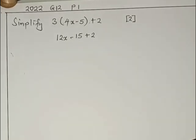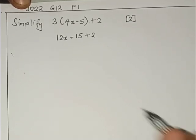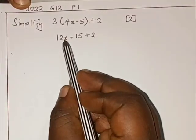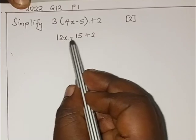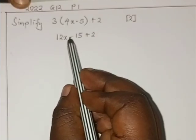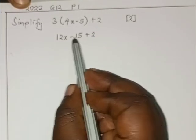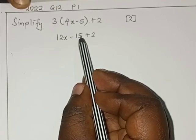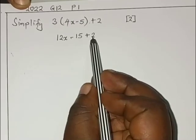From here you will apply the concept of like terms. You add those that are like terms. From this expression here, 12x is on its own, so this cannot be added to 15 or subtracted from 15. They are not like terms. 15 doesn't have x, so the like terms here is 15 and 2.